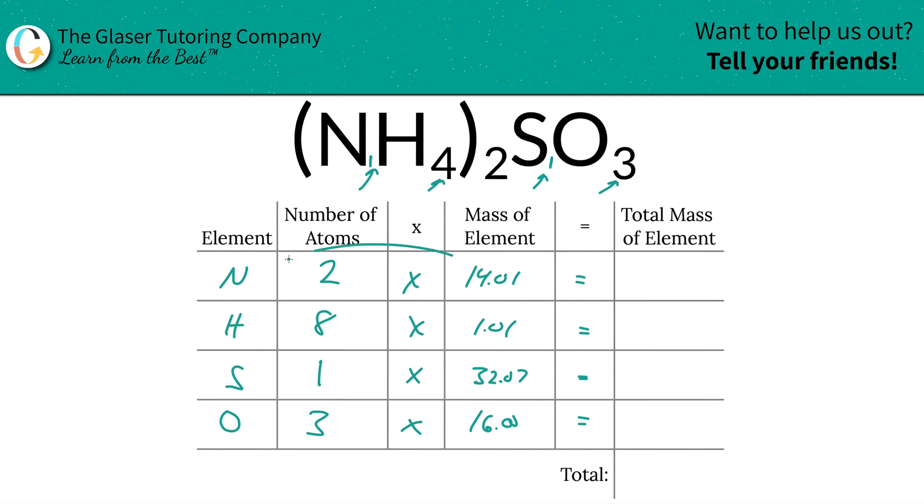Then to find the total mass of the element in the compound, you're simply going to multiply this row across. So the total mass of the nitrogen is going to be 28.02. Hydrogen is going to be 8.08. Sulfur is going to be 32.07, and oxygen is going to be 48.